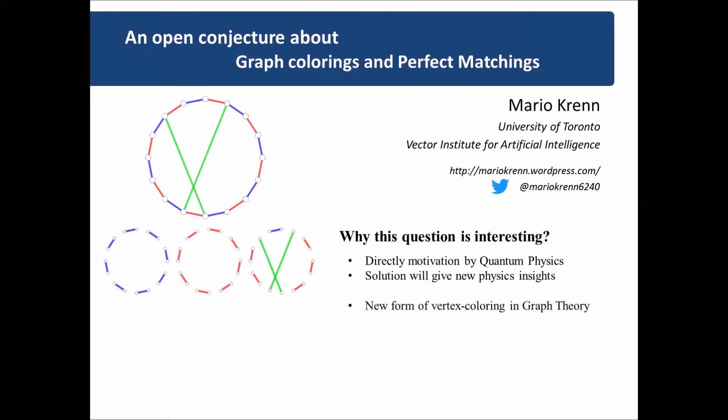Second, mathematically it introduces a new and very natural form of vertex colorings in graph theory that hasn't been studied in the literature, to the best of my knowledge. Third, it is easy to understand and it seems to have a quite surprising solution. Furthermore, I talked about the question for the first time only in 2018, meaning not too many people have worked on it and it could still have a rather simple solution.